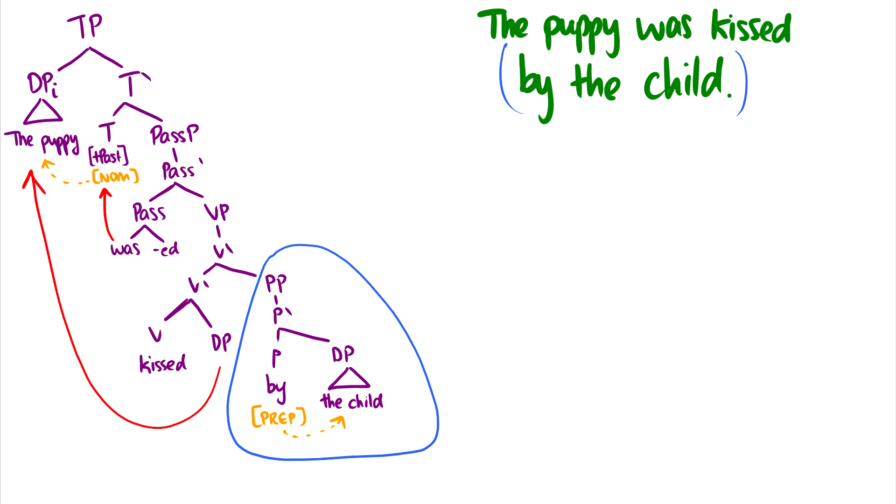But then the question is, this DP, the child, it also needs case. And it does get case, it gets prepositional case by the head of the preposition P. So we can't say the puppy was kissed the child, doesn't make sense. But if we say the puppy was kissed by the child, then we can say that by gives prepositional case to the child and everything is good. And we don't see movement here.